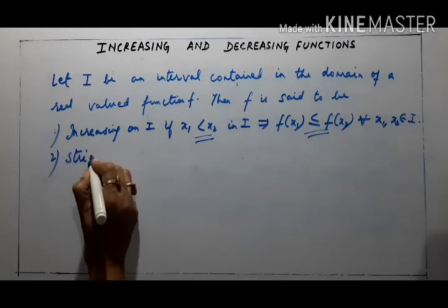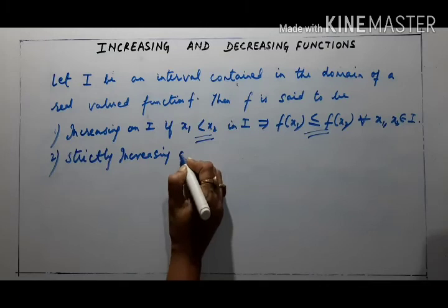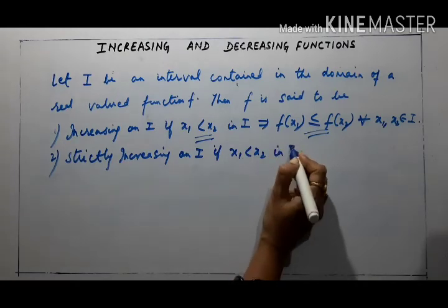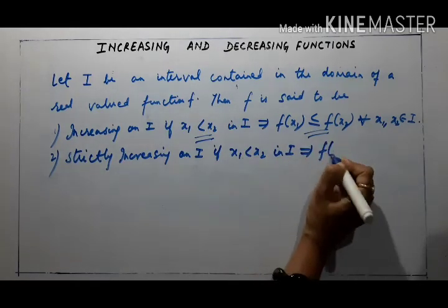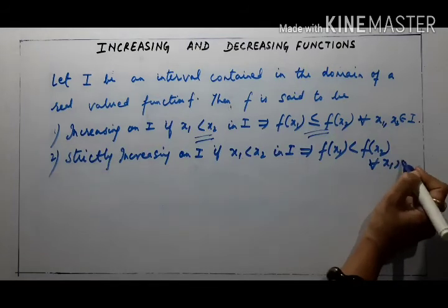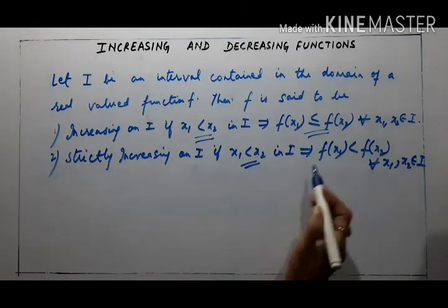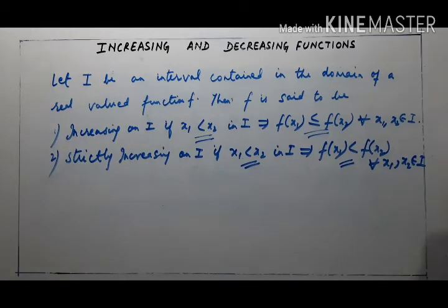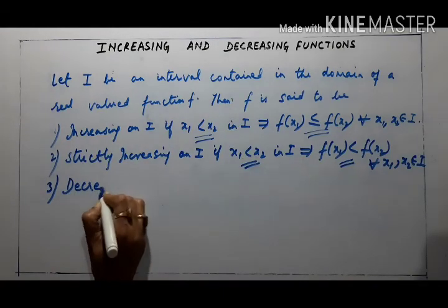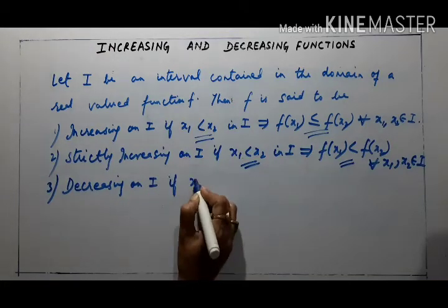Next is strictly increasing. Strictly increasing on I if x1 < x2 in I implies f(x1) < f(x2) for all x1, x2 belonging to I. So for strictly increasing, if x1 < x2 then f(x1) must be less than f(x2) — there is no equal to here.